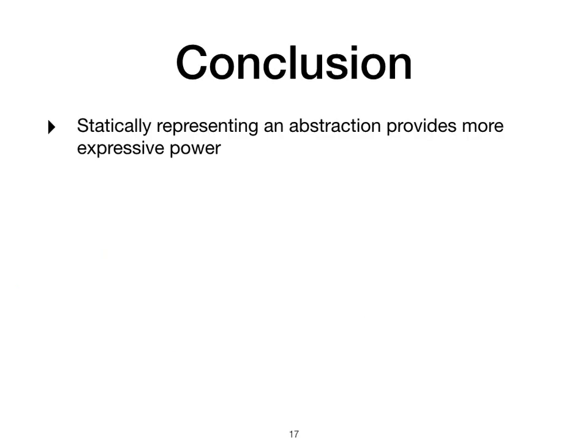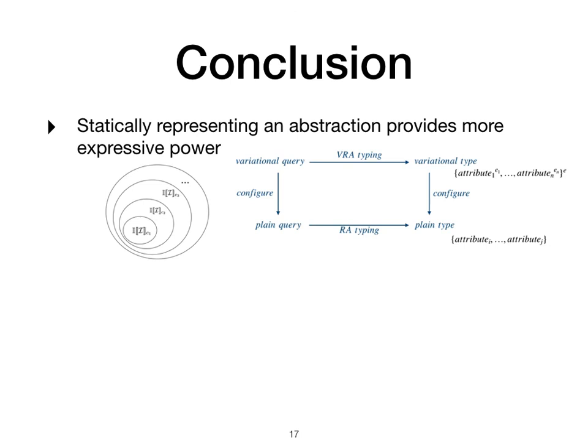What I want you to take away from this talk is two-fold. First is that statically representing an abstraction provides more expressive power. In our case, this allows us to discuss and prove properties regarding variation. So if I have a database that migrates over time and each time I'm adding tuples to it, I expect the older versions to be a subset of the newer ones. We can also prove more general properties such as variation preservation for our type system or semantics.